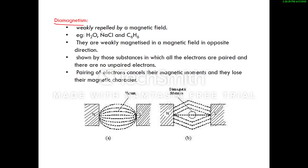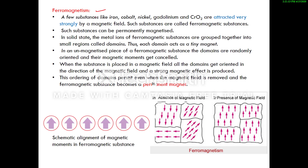Next are diamagnetic substances — these are weakly repelled by the magnetic field. In the diagram, the magnetic lines are repelled when a diamagnetic substance is placed in the field. Examples are water, NaCl, and C₆H₆. They are weakly magnetized in the opposite direction to the applied field. This behavior is shown by substances in which all electrons are paired — there are no unpaired electrons. Pairing of electrons cancels their magnetic moments, and they lose their magnetic character.